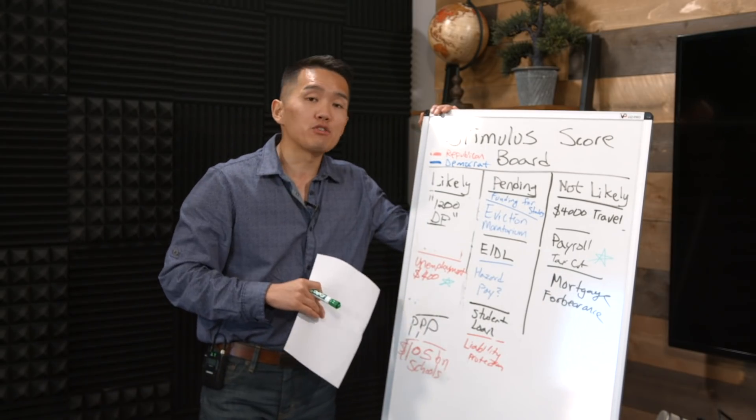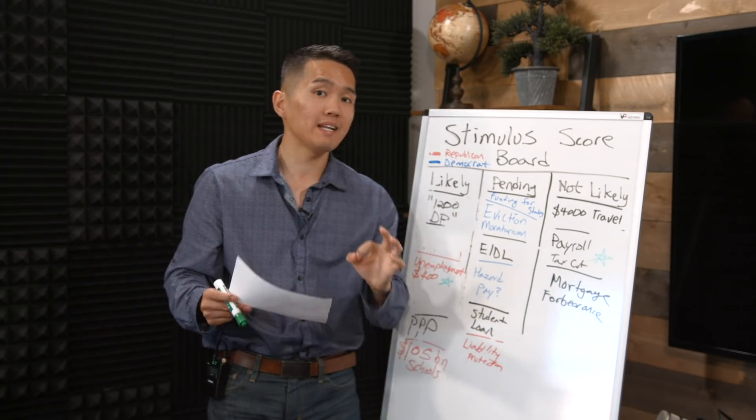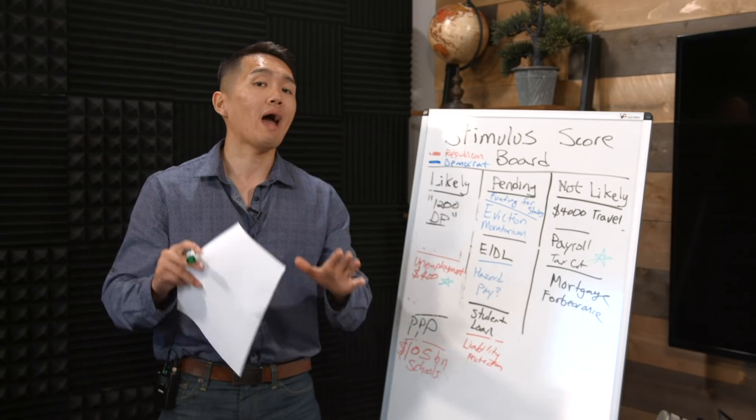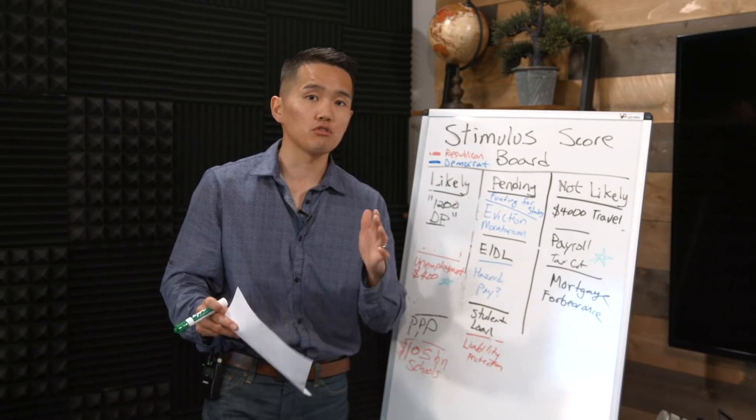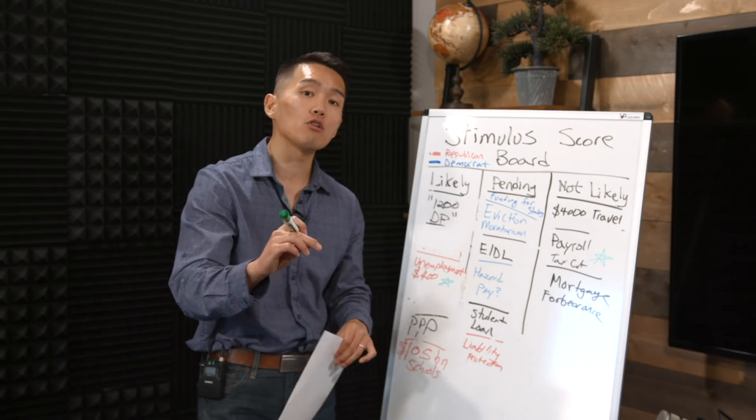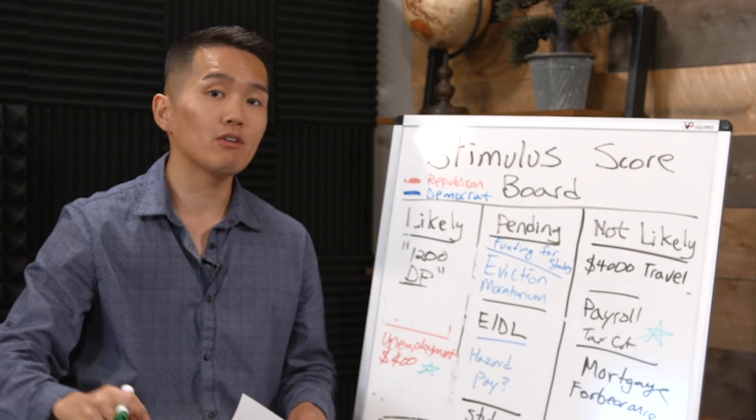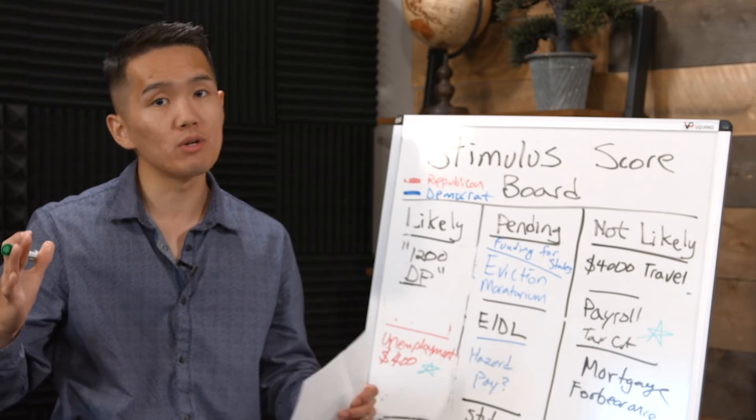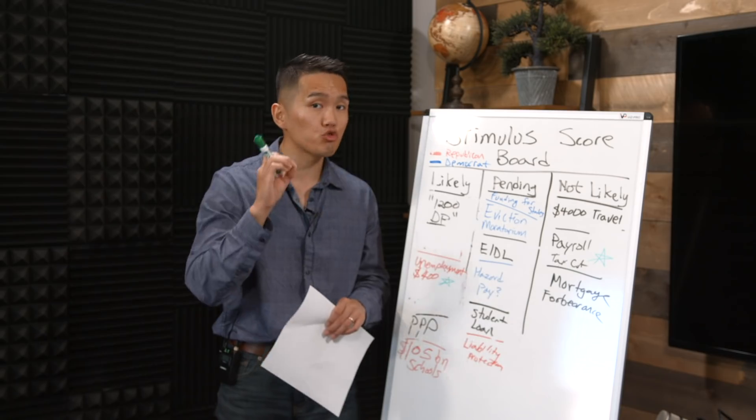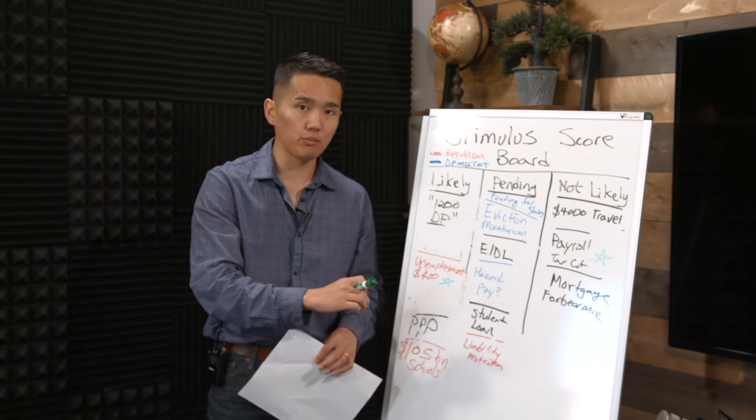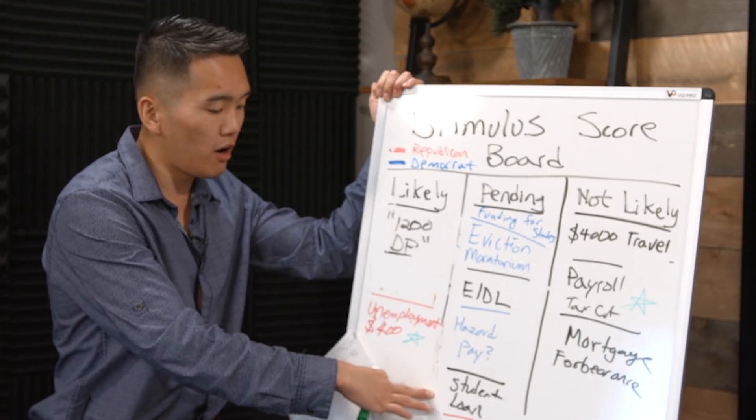The third major item that President Trump signed on as an executive item is the student loan deferment. The student loan will be deferred to December 31st at 0% interest, and if you have a federally backed student loan right now, you don't have to make any payments till December 31st. My general suggestion is that if you have the ability to make payments on your student loan, I strongly encourage you to do so, because every dollar that you put in your student loan right now is going to be principal. Every dollar will count towards principal, as well as help you save money on interest and save time in paying off your student loans.